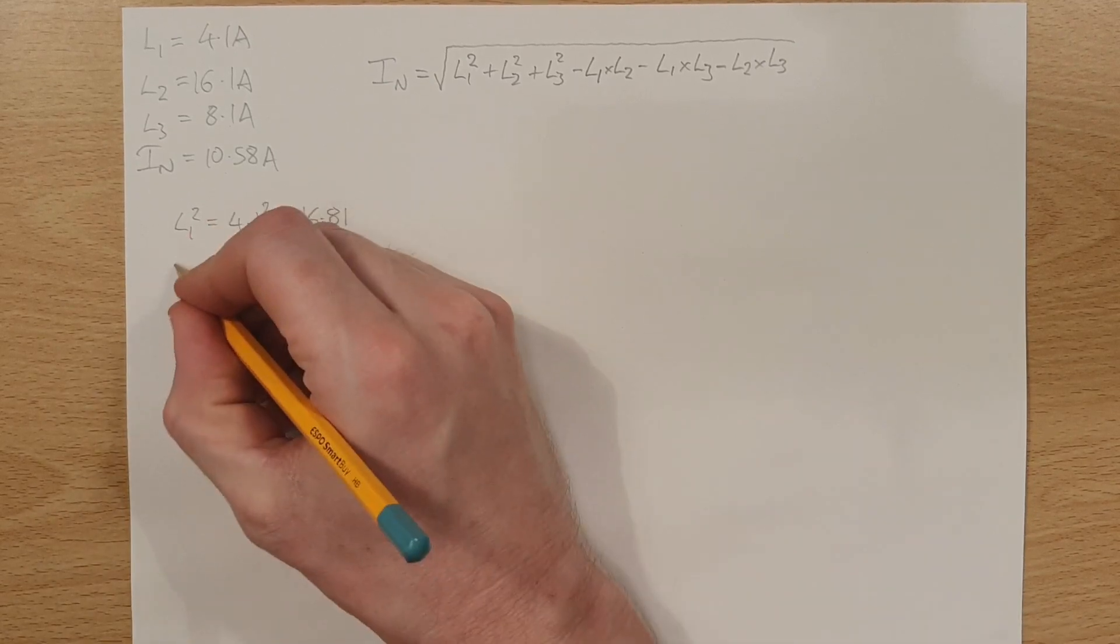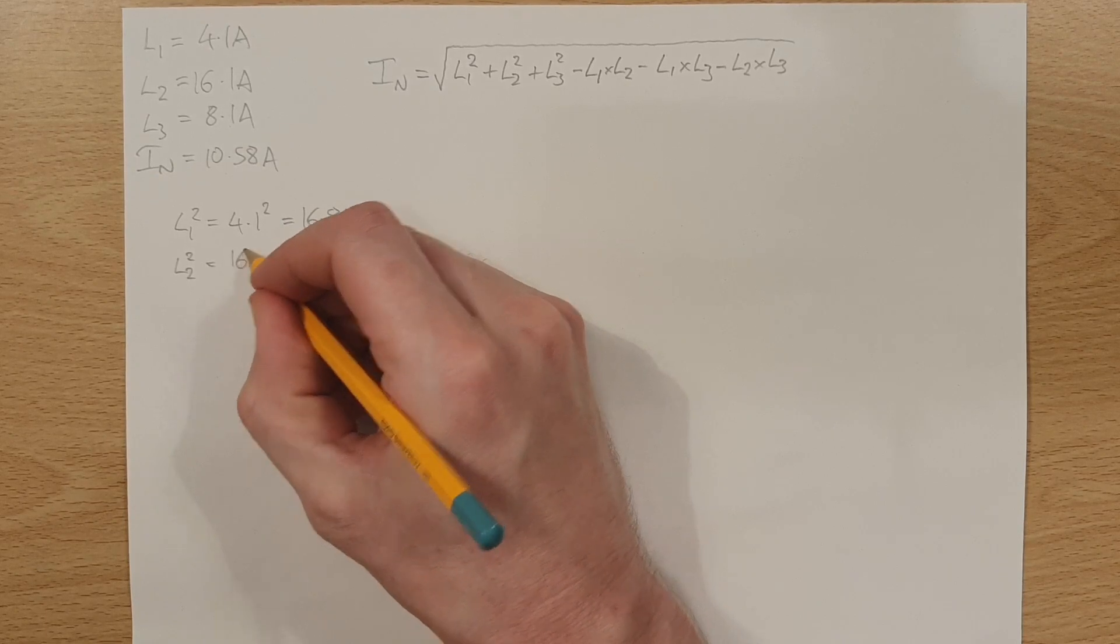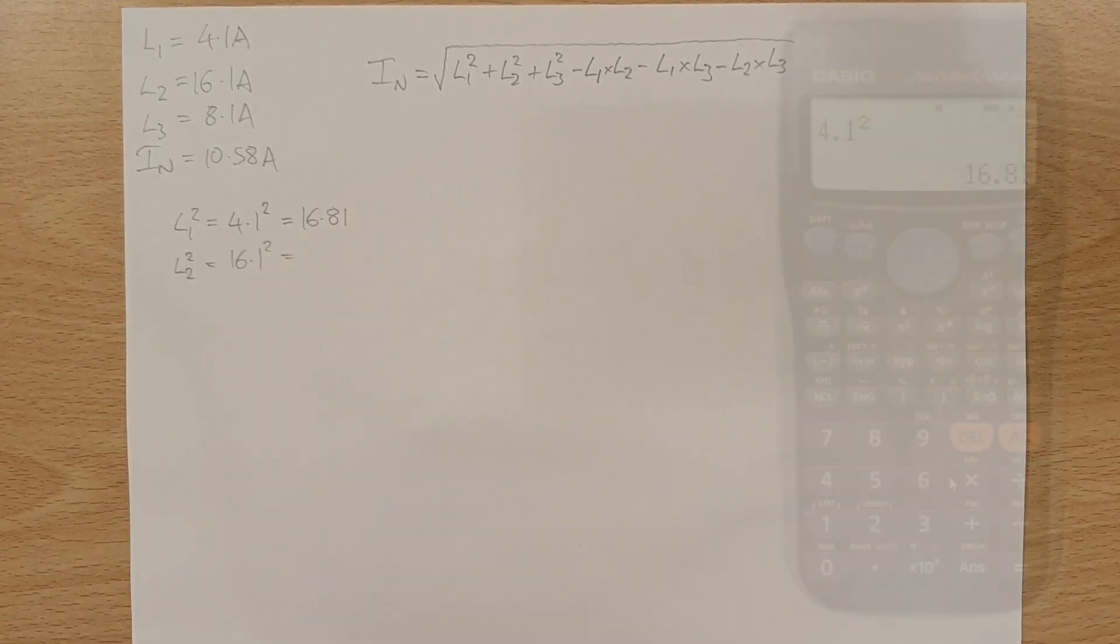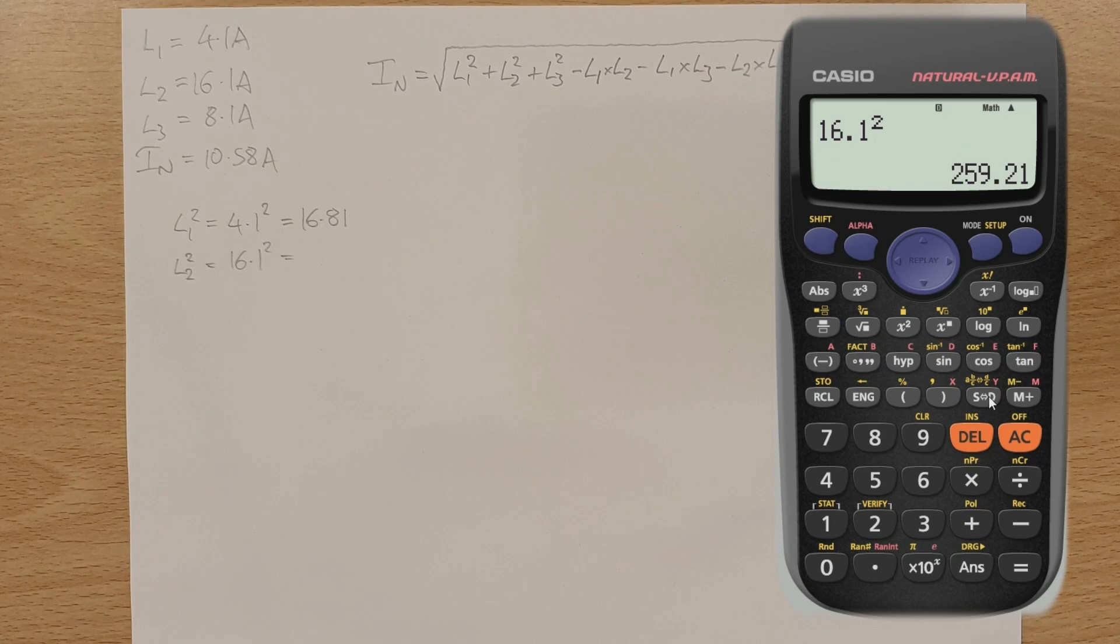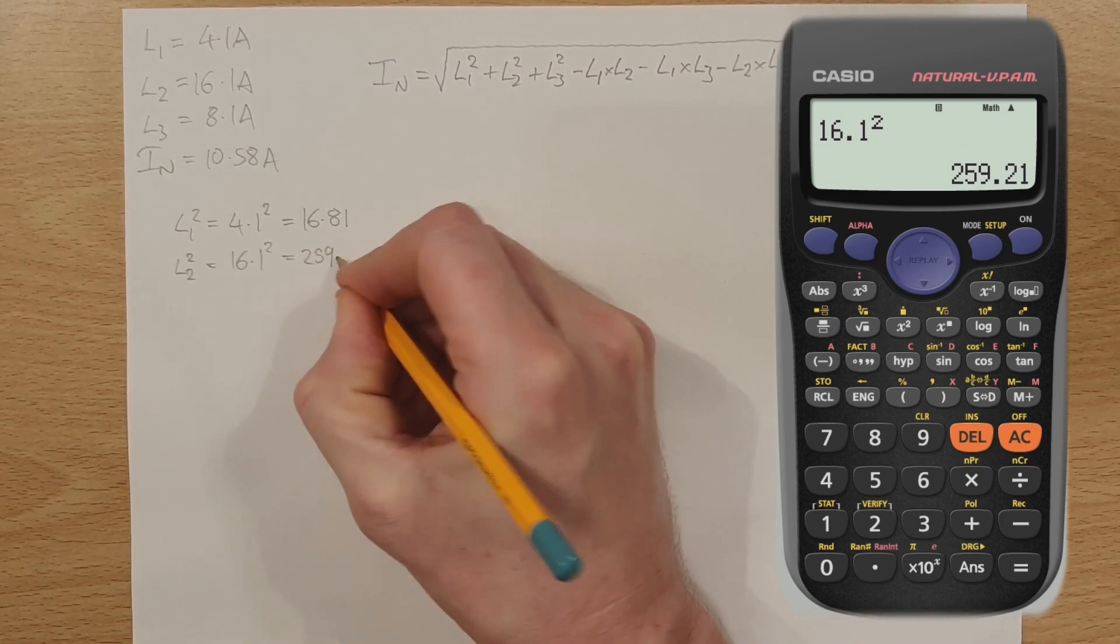And then we're going to do the same for L2. So we're going to square L2. And L2 squared will be 16.1 squared. So we'll figure out what that is on the calculator. So we're going to do 16.1 squared. And that comes to 259.21. 259.21.